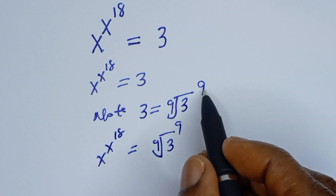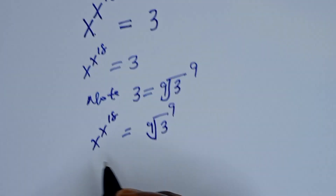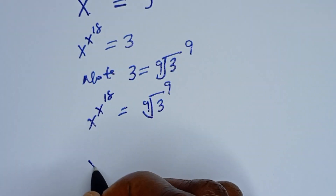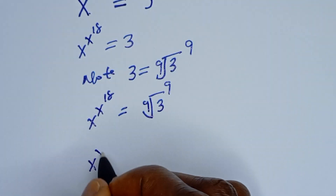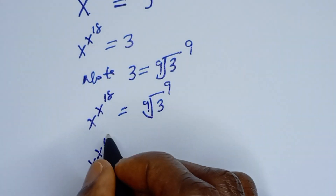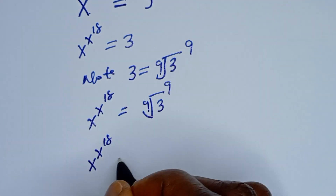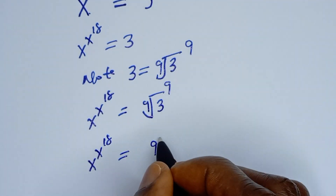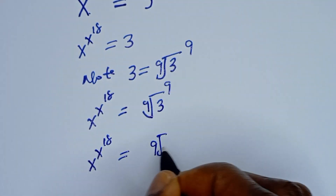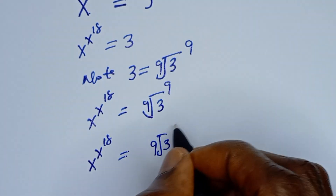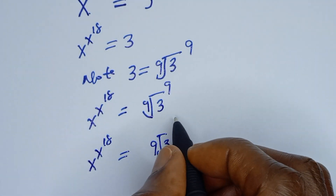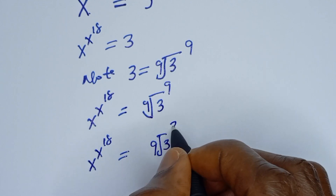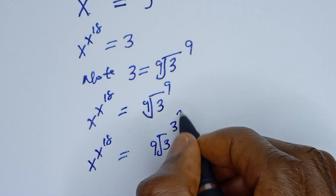9 is equal to 3 squared. So we have x to the power of x to the power of 18 is equal to the 9th root of 3 to the power of 3 squared.